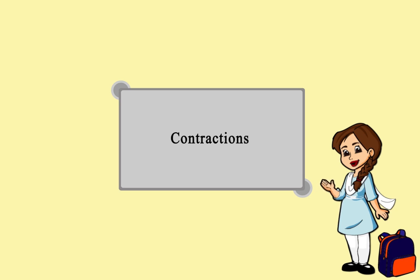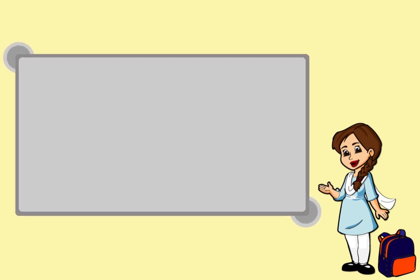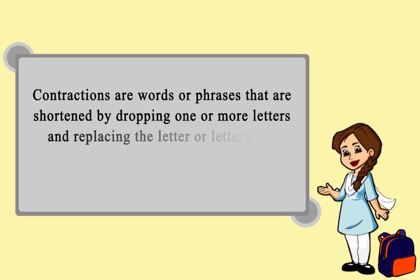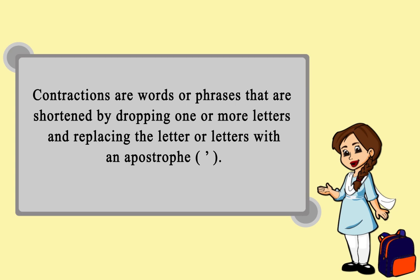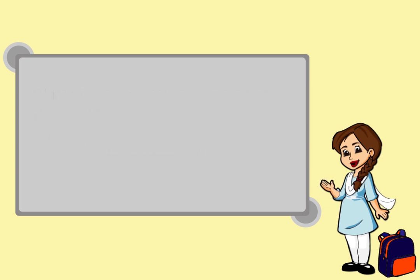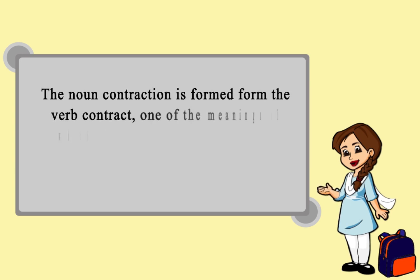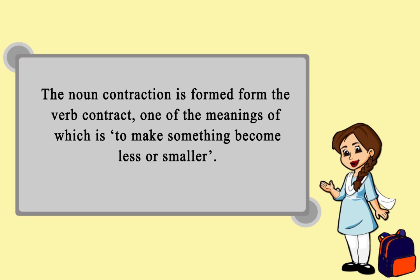Contractions are words or phrases that are shortened by dropping one or more letters and replacing the letter or letters with an apostrophe. The noun contraction is formed from the verb contract, one of the meanings of which is to make something become less or smaller.